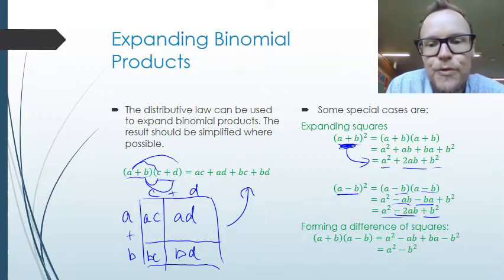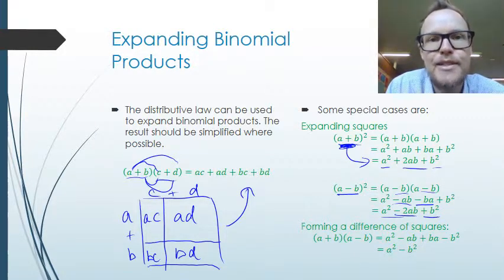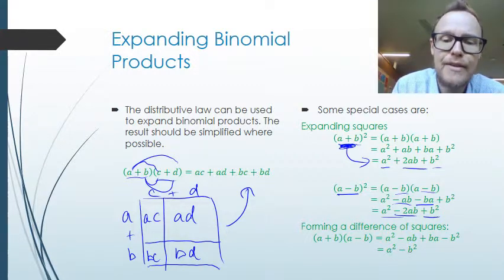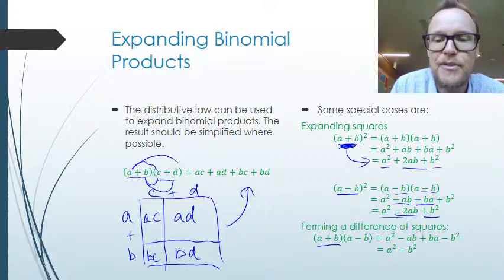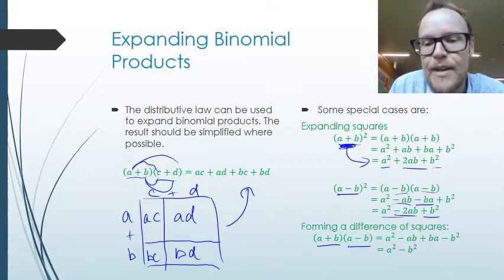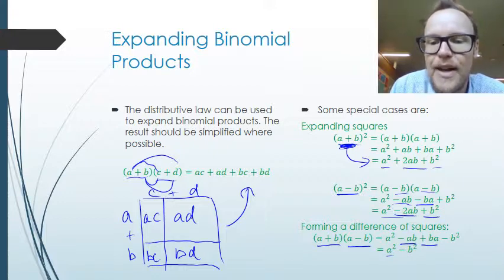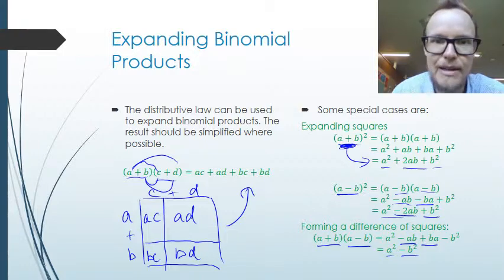We can also form a difference of two squares — also called a difference of perfect squares — by expanding A plus B times A minus B. If we expand that out, the minus AB and plus AB cancel, and we're just left with A squared minus B squared.